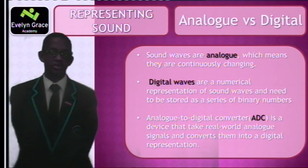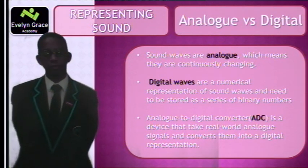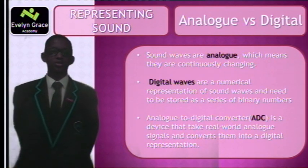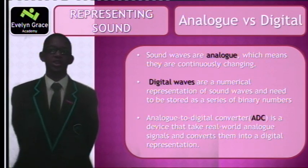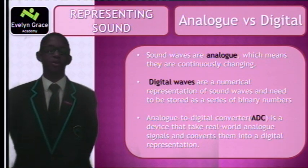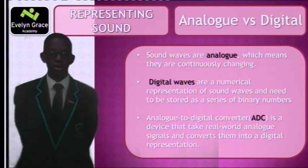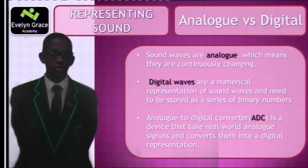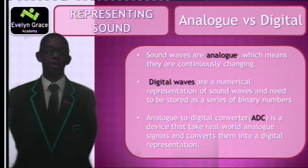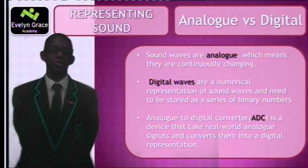Sound waves are analogue. This means that they can travel through matter and that is the only way we can hear them. Digital waves are a numerical representation of an analogue sound wave. However, they have to be stored as binary numbers as that is the only way a computer would be able to understand them. An analogue to digital converter, also known as an ADC, is a device that takes real-world analogue signals and converts them into a digital representation.